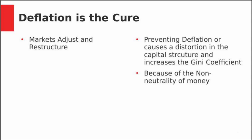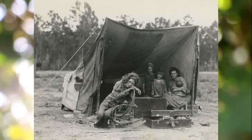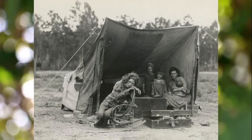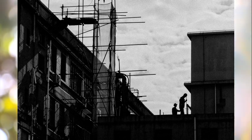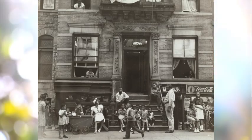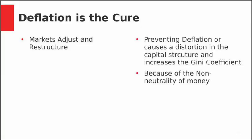It's because money is non-neutral that Federal Reserve policy and fiscal policy disrupt the markets. This non-neutrality of money creates a disruption, and it also exacerbates the Gini coefficient — the rich get richer and the poor get poorer. Preventing deflation causes a distortion in the capital structure and increases the Gini coefficient, so any monetary or fiscal policy actually makes inequality worse. There are always first receivers of money — whether it's the central bank creating money out of thin air and giving it to bankers rather than to the people, or fiscal policy where the government creates a program where some benefit and others don't. Deflation is the cure; letting the markets work is the cure.